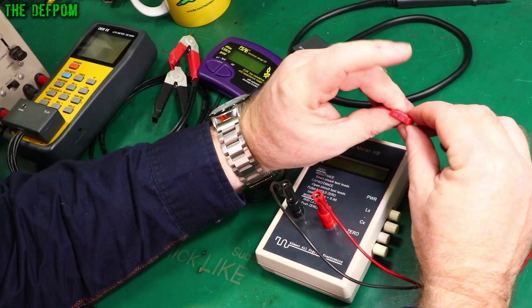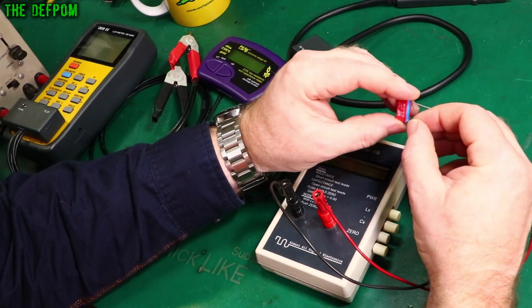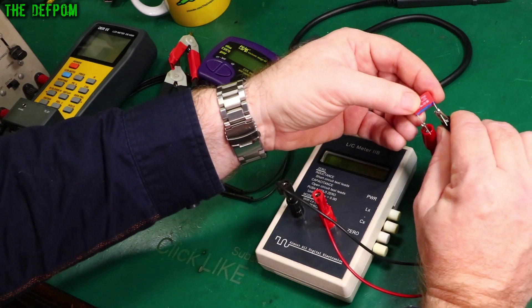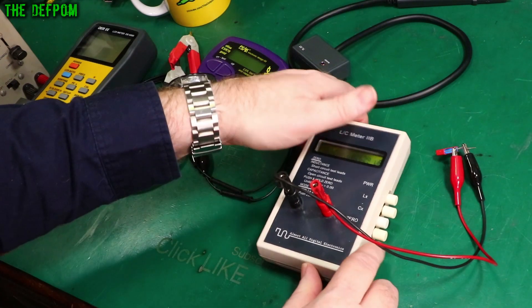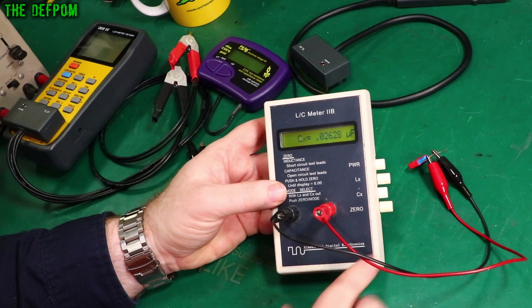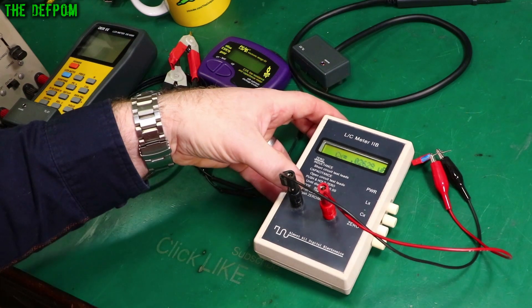All right, so I've got a different capacitor here. This is a 273 marking which is a ceramic cap I think it is. So 273 is 27 nanofarad. What do we get? 26.2. It's working fine on this capacitor though. This is not electrolytic.